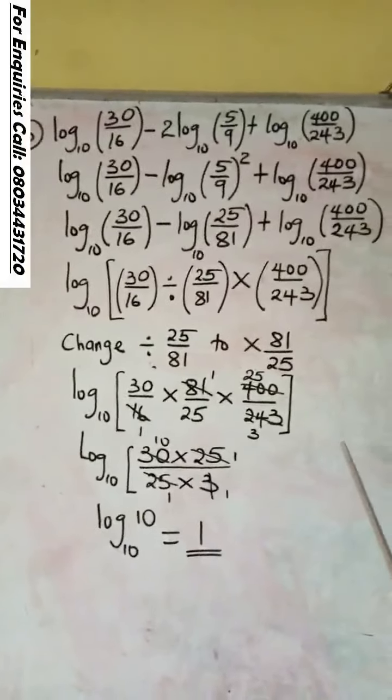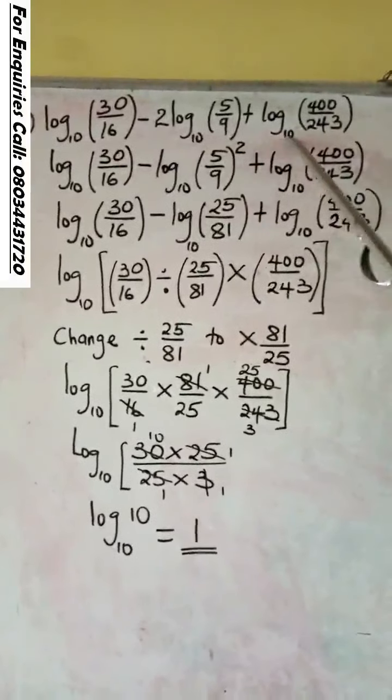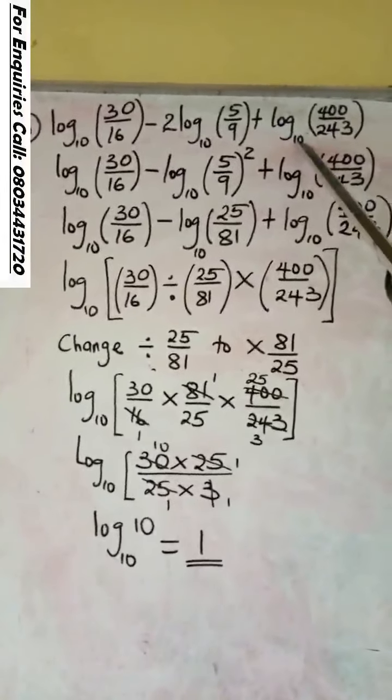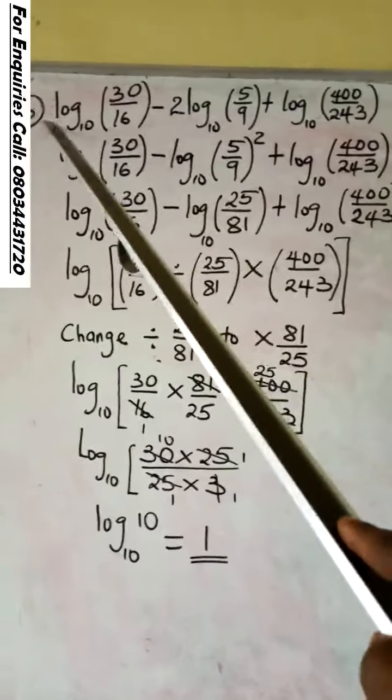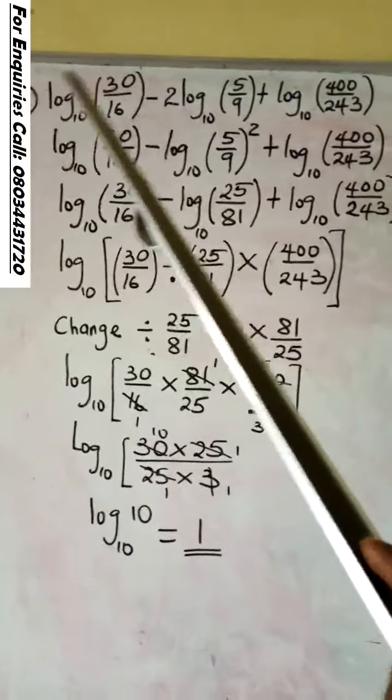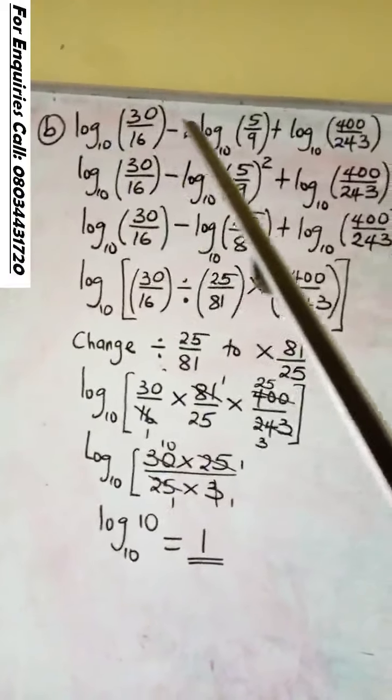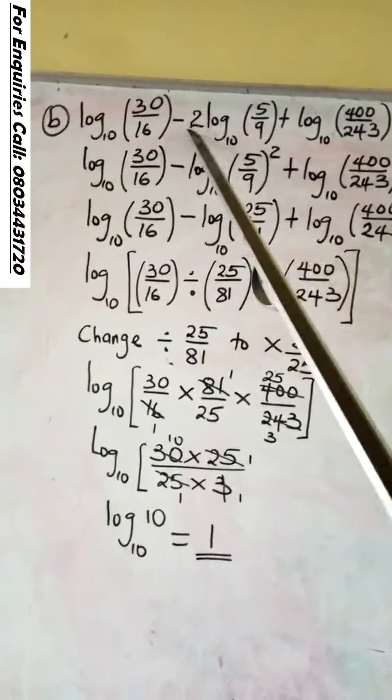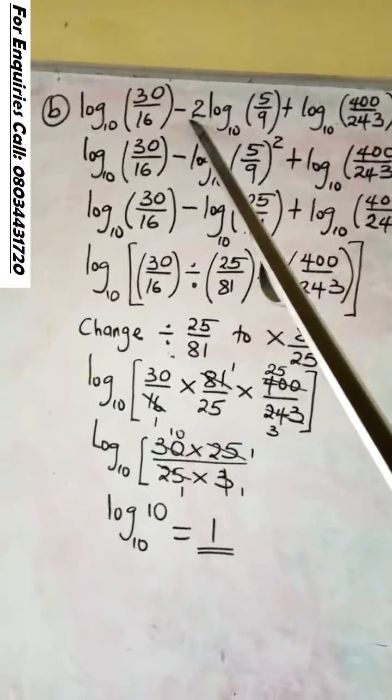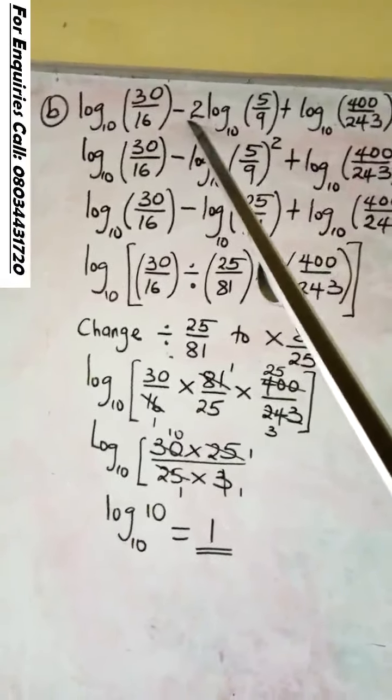Now, what you do is to look at the expression. Make sure there is no value at the front of the log. That is the first step to follow. In the first one, there is no value there. In the second one, we have value there too. So it is not proper to have 2 there. It is not proper to have value at the front of the log when simplifying.